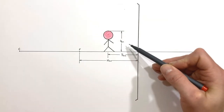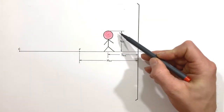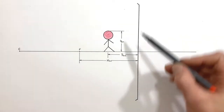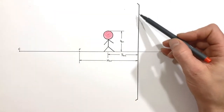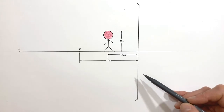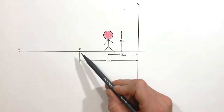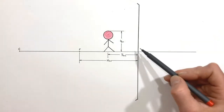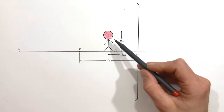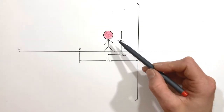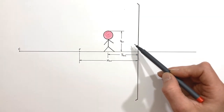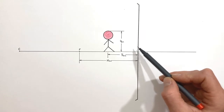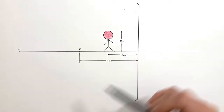Today we're going to look at the situation of a four centimeter tall object placed five centimeters in front of a concave mirror which has a focal length of 10 centimeters. In this problem we're going to draw a ray tracing diagram for this object, as well as use the mirror and magnification equations to determine where the image is going to appear in this mirror.